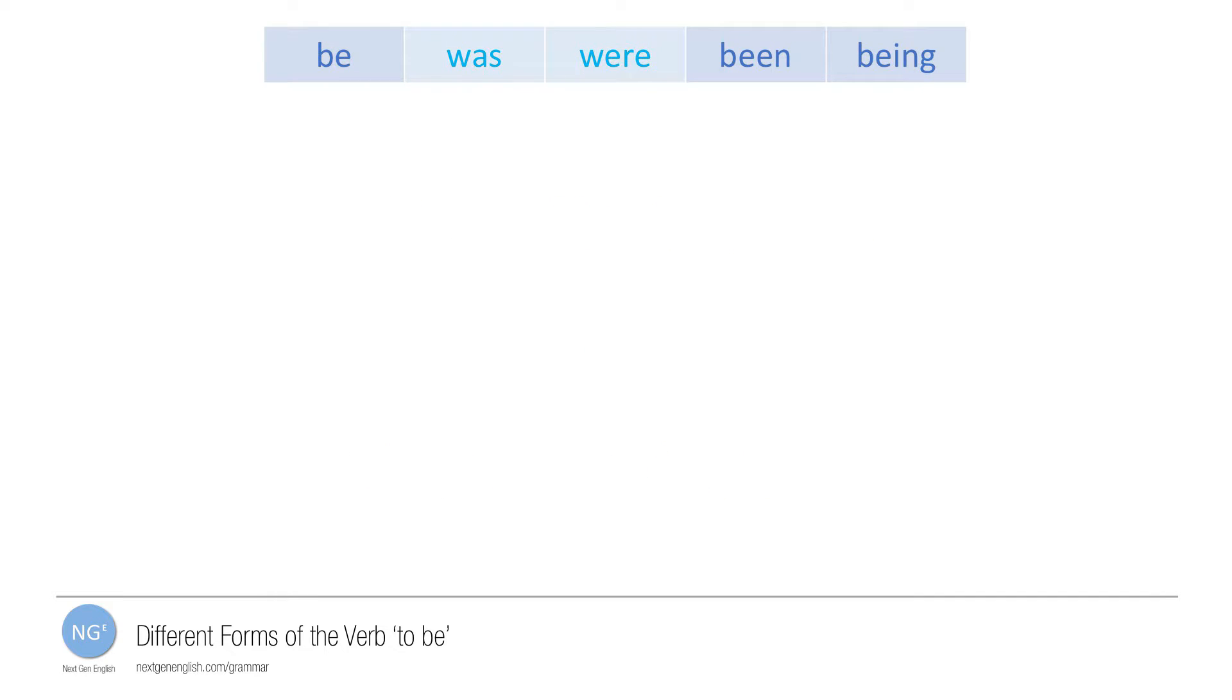We use two forms of the verb to be to talk about completed actions in the past: was and were. These are the past simple or verb two forms of to be.